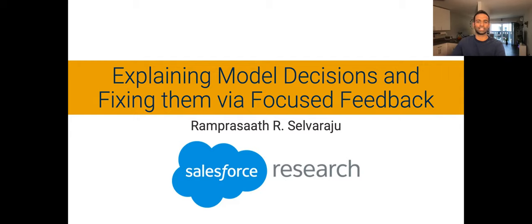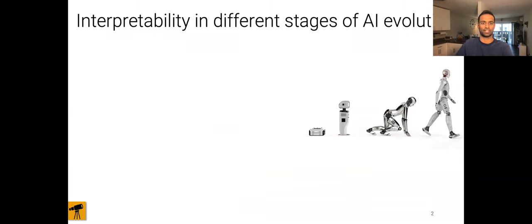Hi everyone, I'm Ram Prasad and I'm going to discuss some works on explaining the decision making process of deep networks and how understanding this decision process can help us fix various characteristics of the model. We need interpretability in order to build trust in intelligent systems that we are building and move towards meaningful integration into our everyday lives.